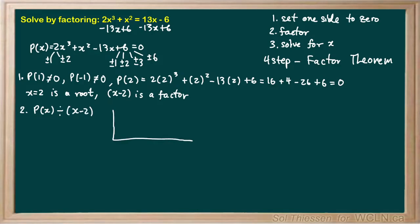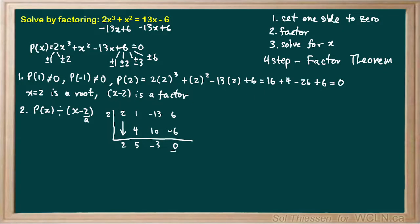I'll do that synthetically. Bringing down the coefficients of the polynomial: 2, 1, negative 13, and 6. The number outside the synthetic division sign is positive 2, the a-value from our divisor x minus a. Drop down the first coefficient, then multiply: 2 times 2 gives 4. Add vertically: 1 plus 4 is 5. Then 2 times 5 gives 10; negative 13 plus 10 gives negative 3. And 2 times negative 3 gives negative 6; 6 plus negative 6 gives 0. We have a remainder of 0, as expected since x minus 2 is a factor.